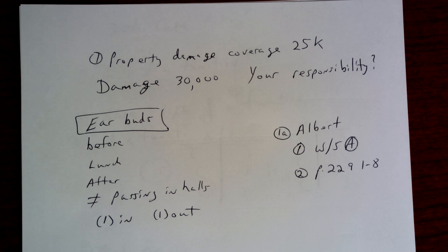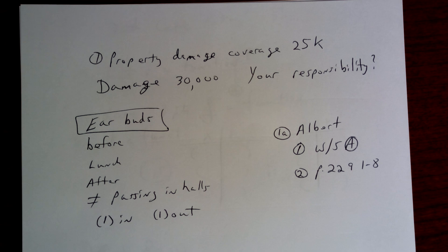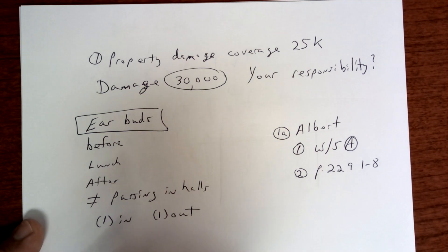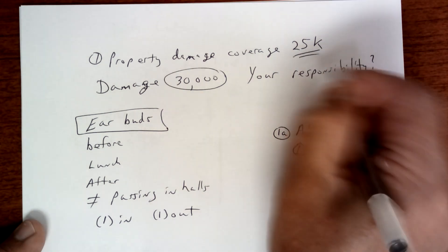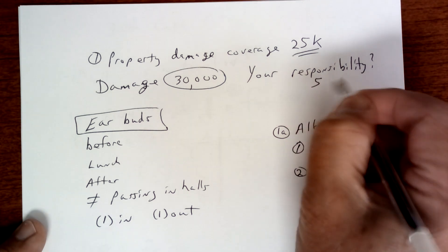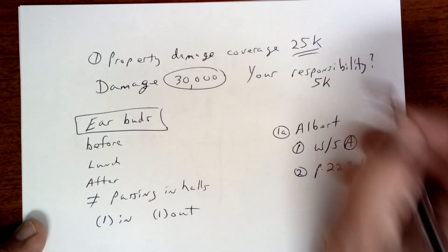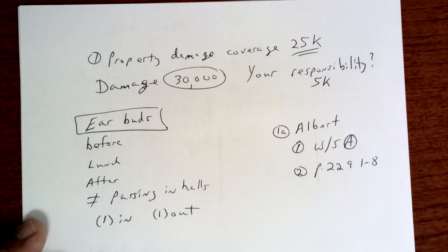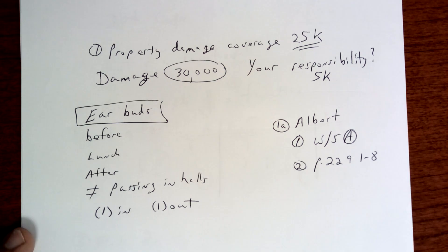Hello and good morning. Let's take a look here — if you cause property damage of $30,000 and you're only covered at $25,000, you owe $5,000 and you have to come up with it out of pocket.